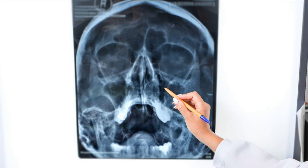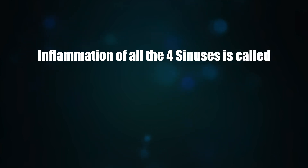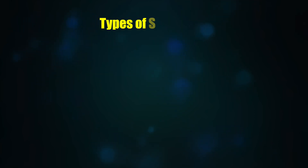Sinuses are air-containing cavities in certain bones of the skull. They contain air to make the skull lighter and to protect against trauma. Sinuses surrounding the nose are called paranasal sinuses. The four paranasal sinuses are the frontal sinus, maxillary sinus, ethmoid sinus, and sphenoid sinus. Inflammation of all four sinuses is called pan rhinosinusitis.